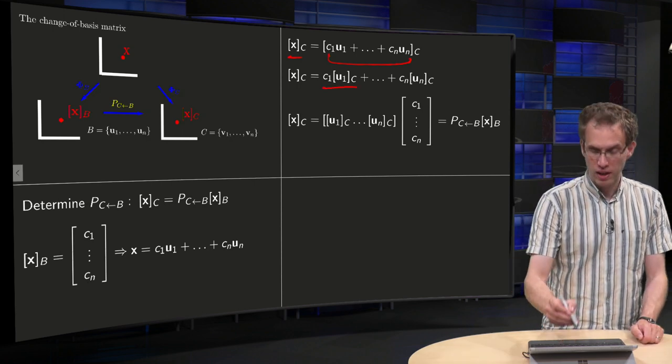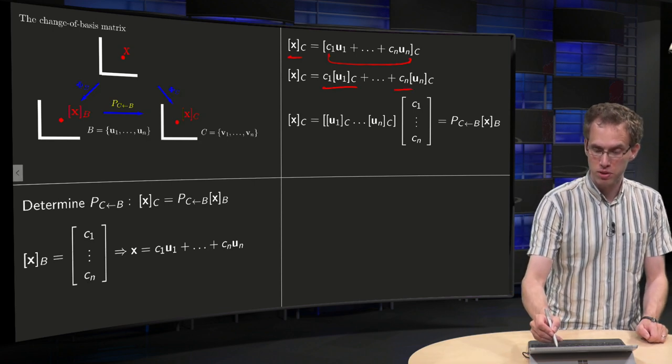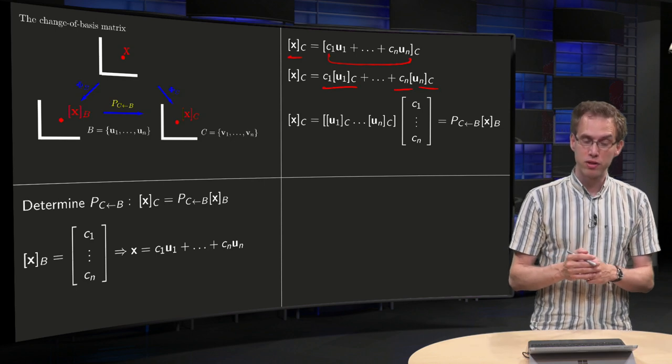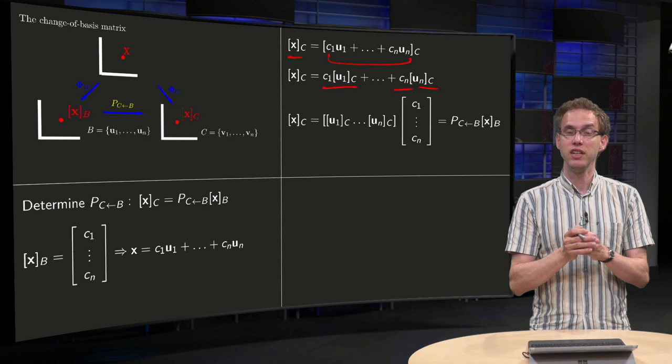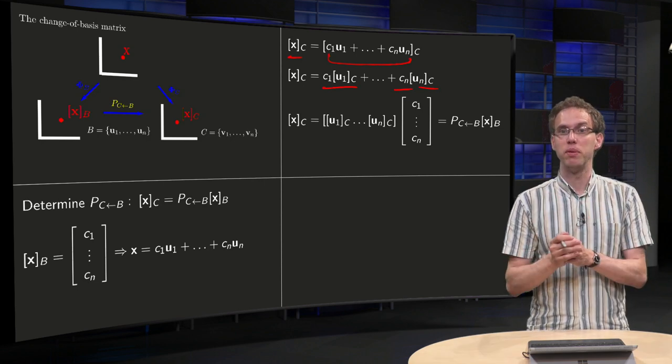So we get x in the basis C equals c_1 times u_1 in the basis C up till c_n times u_n in the basis C. But now we are happy again, because what do we have over here? x in the basis C, which is a vector in R^n, equals a scalar times u_1 in the basis C.